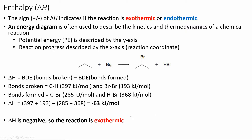Using the bond dissociation energy table, we can calculate the delta H change for a reaction by comparing the bond dissociation energy of the bonds being broken compared to the bonds being formed. So depending on the stability of the bonds being broken relative to the bonds being formed, we'll have either an exothermic or endothermic reaction. In this example, we're breaking a carbon-hydrogen bond and a bromine-bromine bond, and forming a carbon-bromine bond. Since the delta H for this specific reaction is negative — negative 63 — the reaction is going to be exothermic.